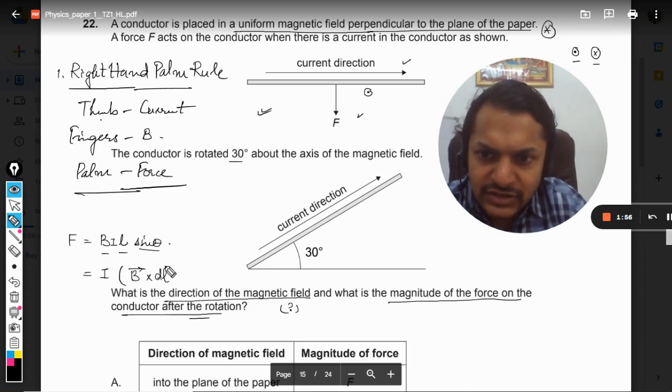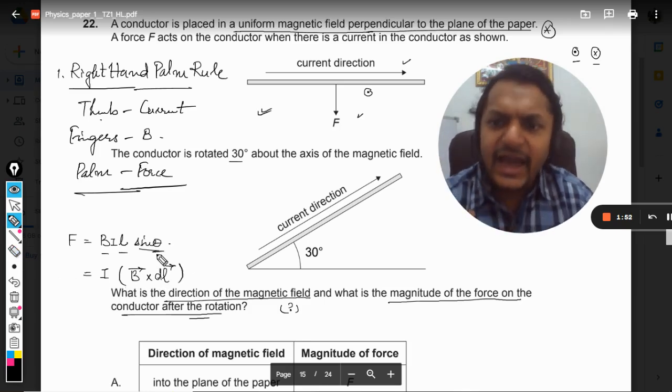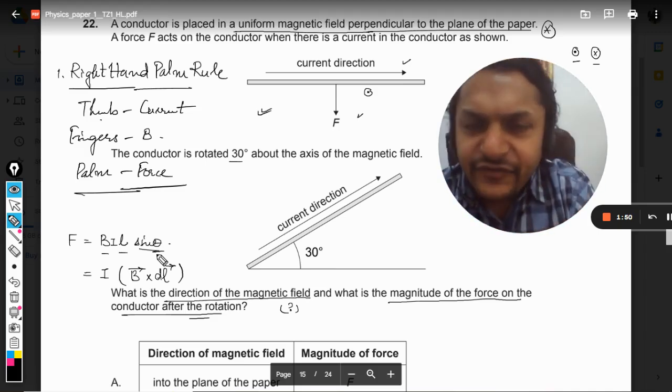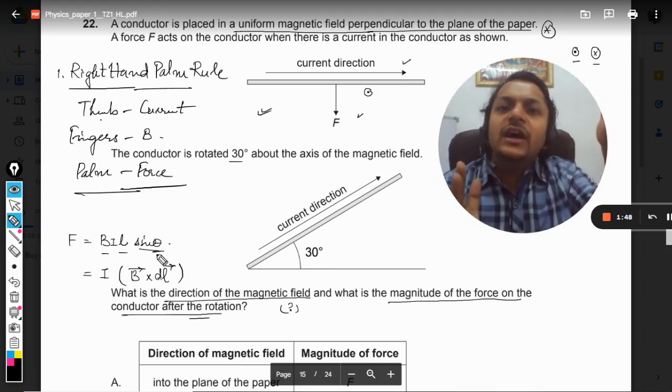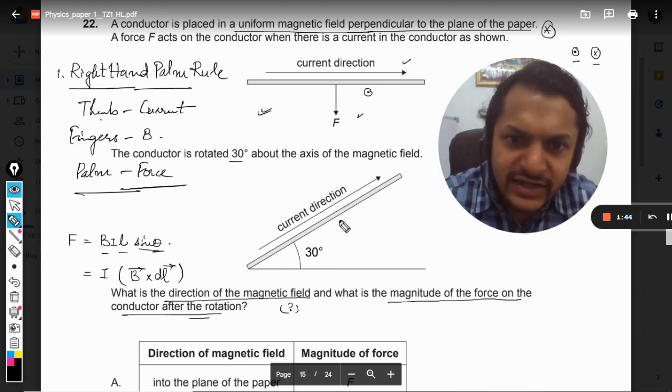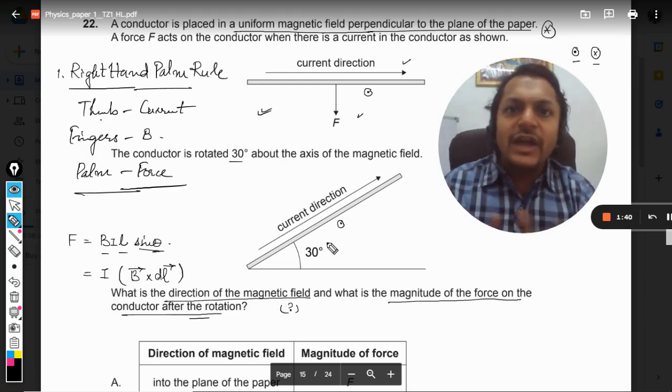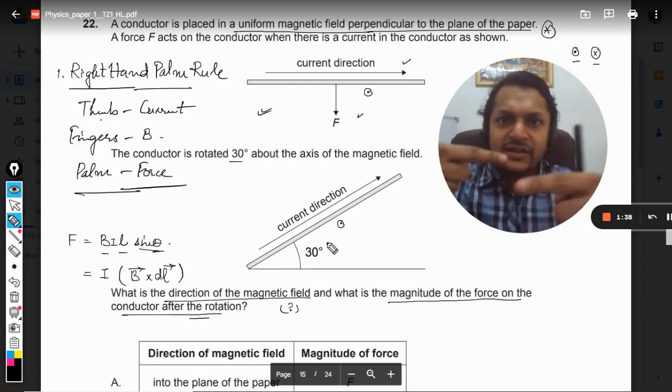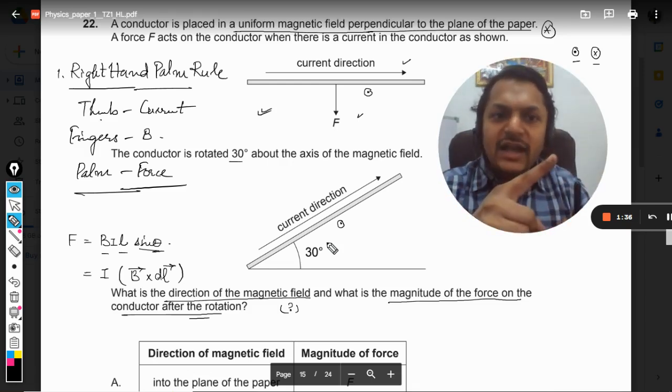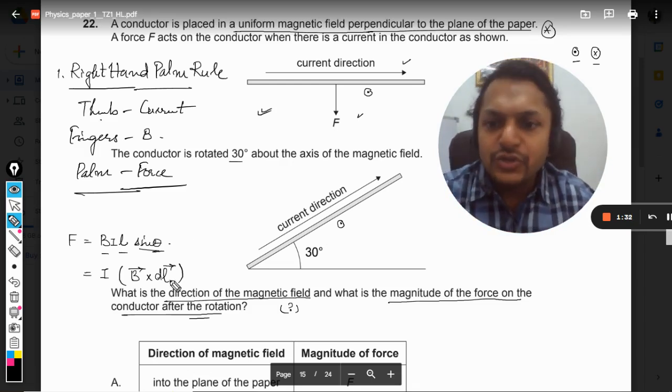So it is generally written as B vector cross dL vector, somewhat like this. So this theta is the angle between magnetic field and the length of the wire. The length of the wire is this and the magnetic field is still coming out of the board. So earlier the angle was 90 degrees between the wire and the magnetic field, and even now the angle between the wire and the magnetic field is 90 degrees. So in both of the cases, theta doesn't matter.